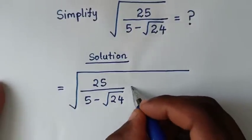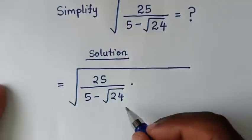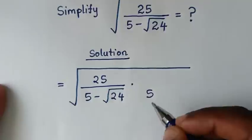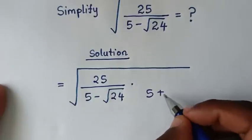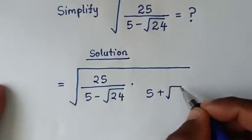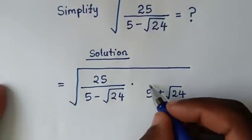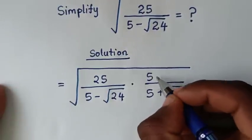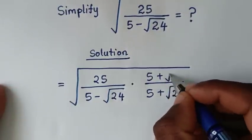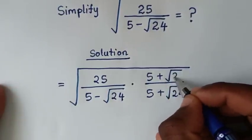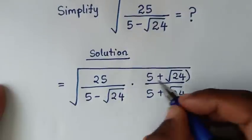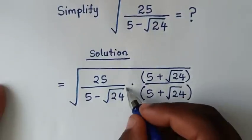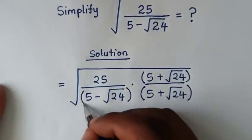So, we'll multiply by the same denominator — we'll multiply by 5, and here we have minus, so it will be plus square root of 24. Also in the numerator, we'll multiply by 5 plus square root of 24.